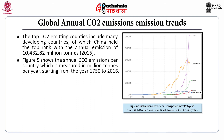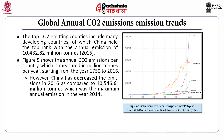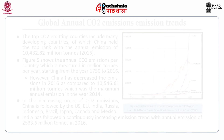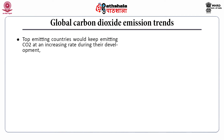This figure shows annual carbon dioxide emissions per country, measured in million tons per year, from 1750 to 2016. China's emission decreased in 2016 compared to 10,546.61 million tons, which was the maximum annual emission in 2014. In decreasing order, China is followed by the US, European Union, India, Russia, Indonesia, Brazil, Japan, Canada, and Mexico. The top emitting countries would keep emitting carbon dioxide at an increasing rate during their development.